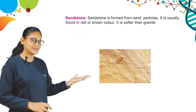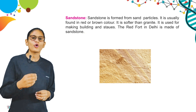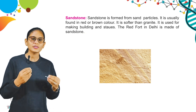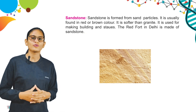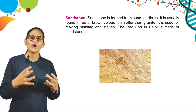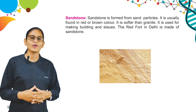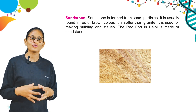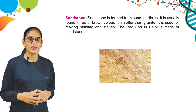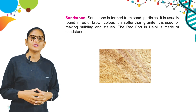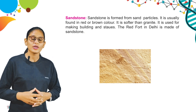Now we have sandstone. Sandstone is formed from sand particles. It is usually found in red or brown color. It is softer than granite. It is used for making buildings and statues. The Red Fort in Delhi is made of sandstone.